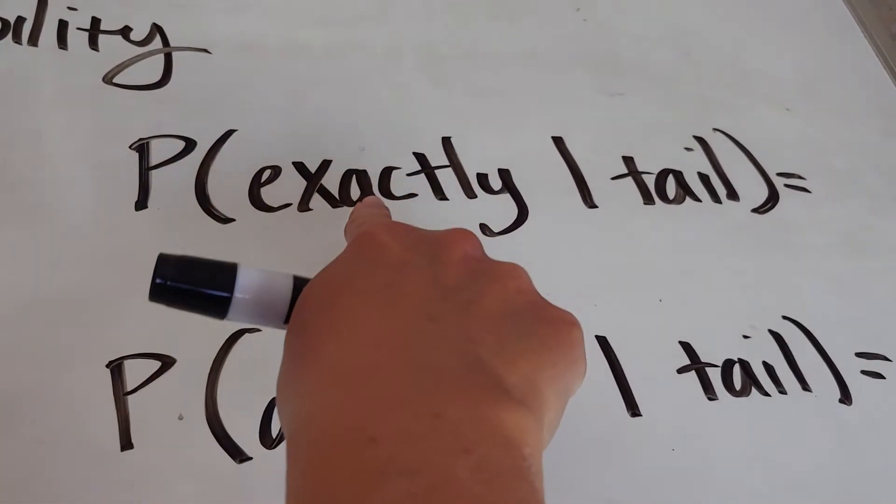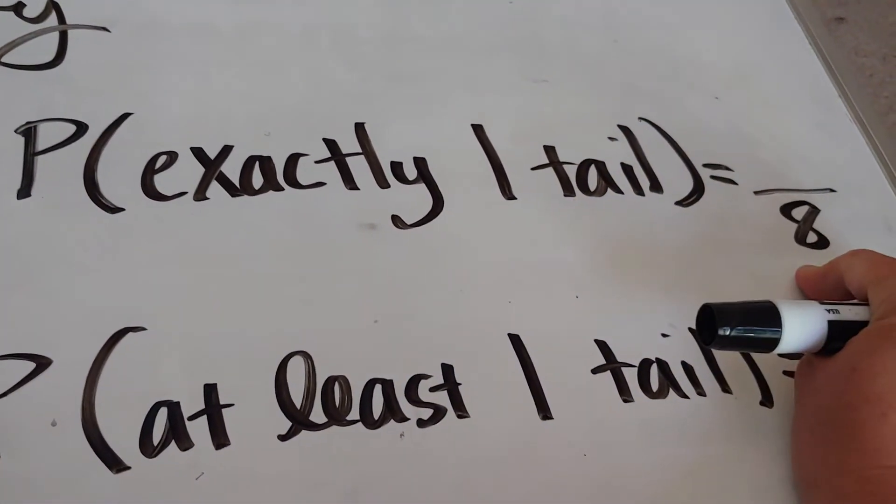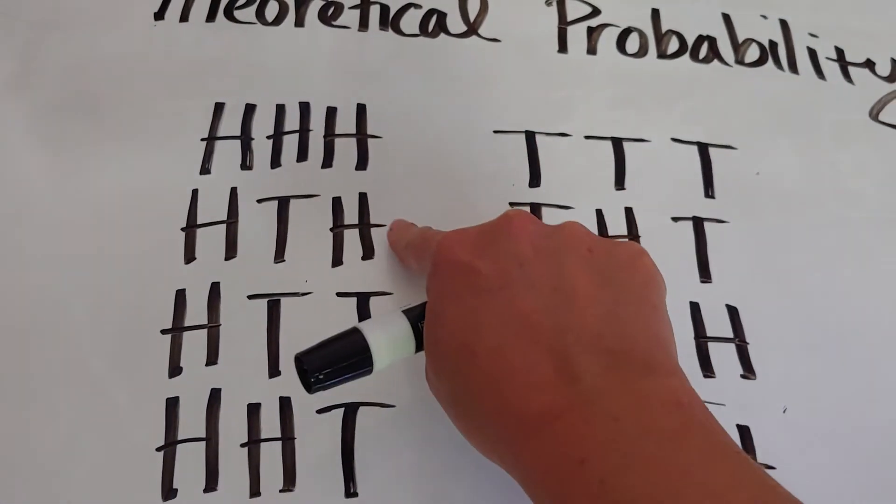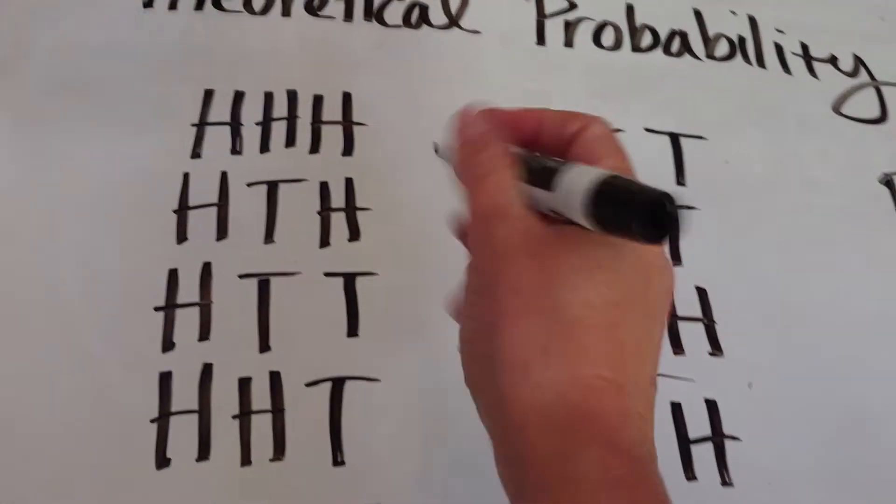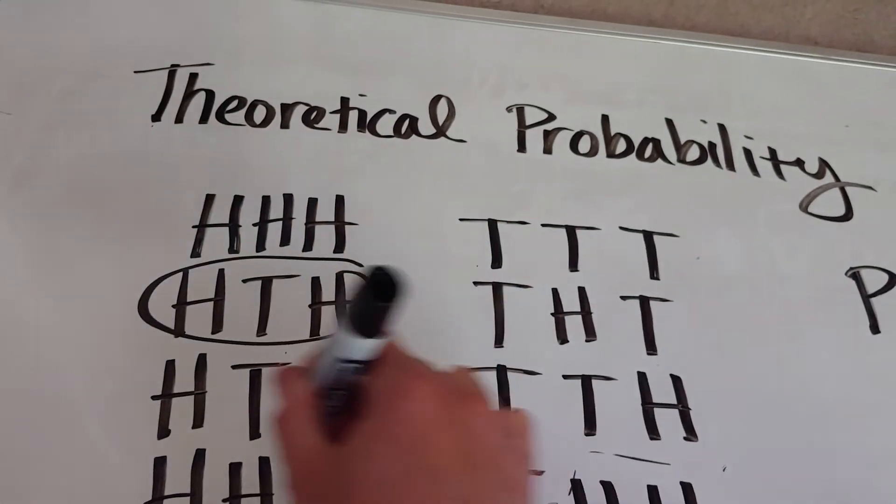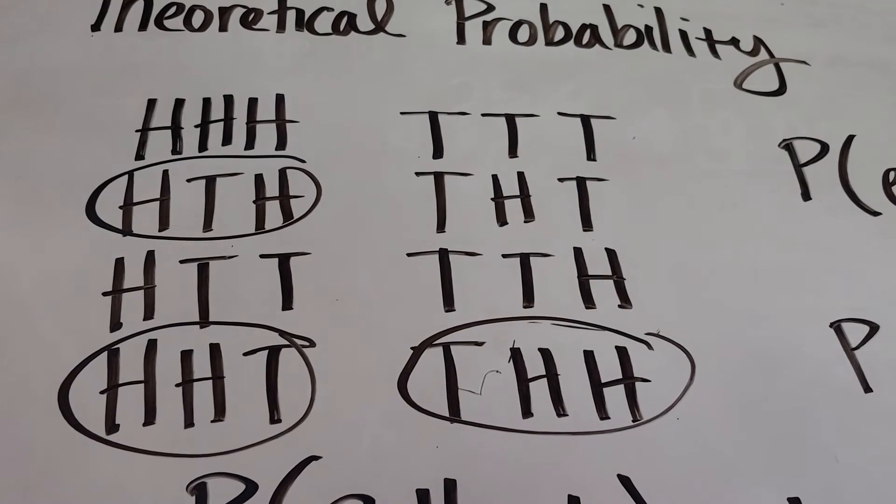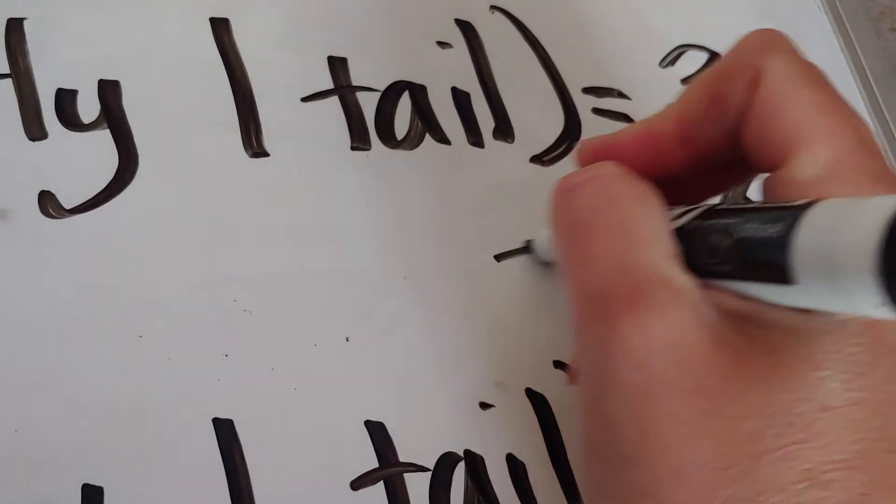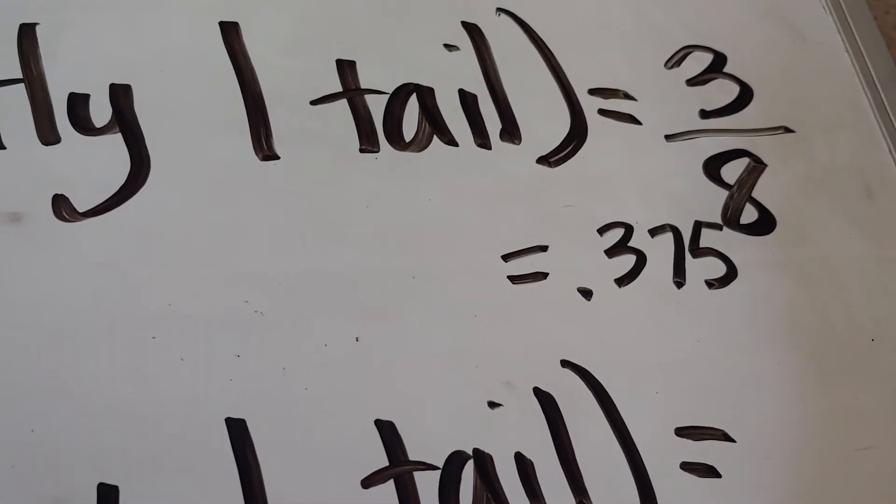We want to know the probability of getting exactly one tail. So of my list of eight, I'm going to look to see how many have just one T. There's one T, one T, and one T, so three. Three out of eight is going to be getting exactly one tail. If we take three and divide it by eight in our calculator, you are going to get 0.375, which is the same thing as 37.5%.